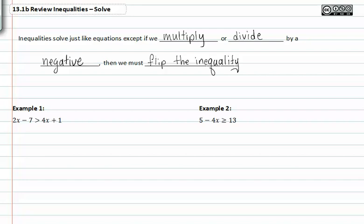Let's solve example one. We're going to need to remember how to solve, graph, and write in interval notation. Add seven to both sides and subtract four x from both sides. We get negative two x is greater than eight.